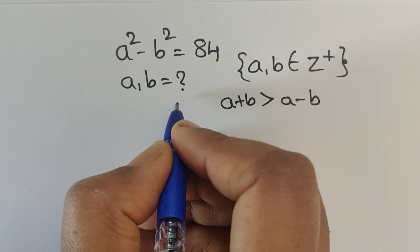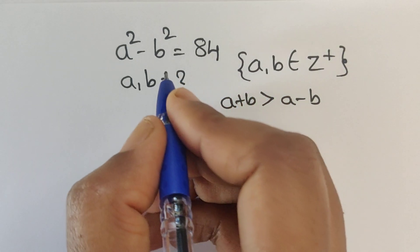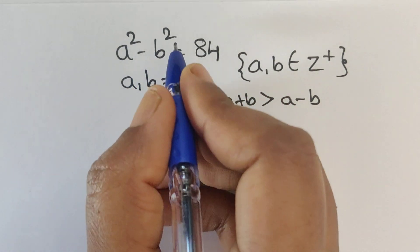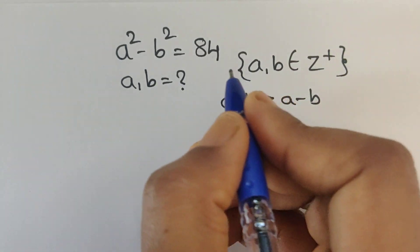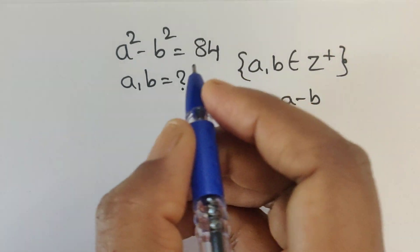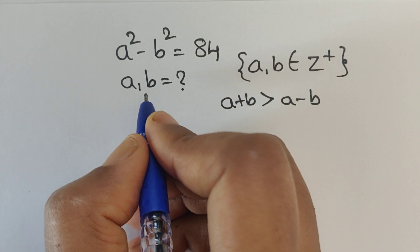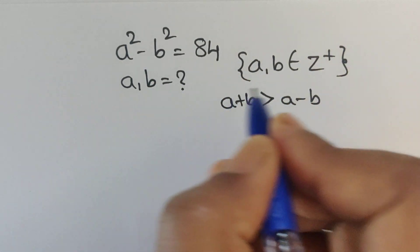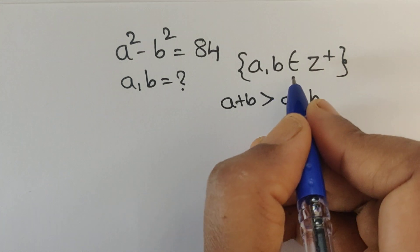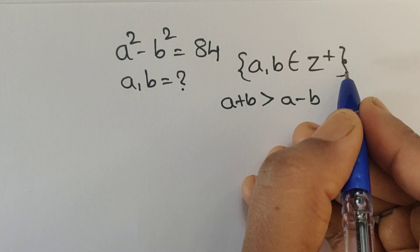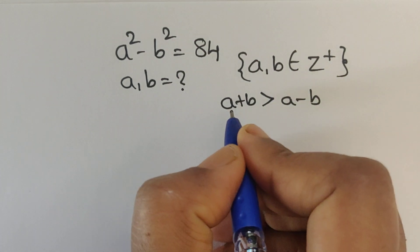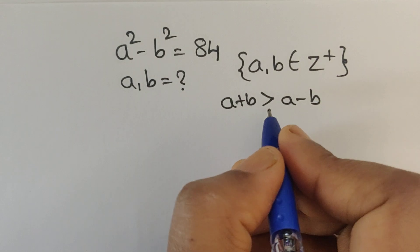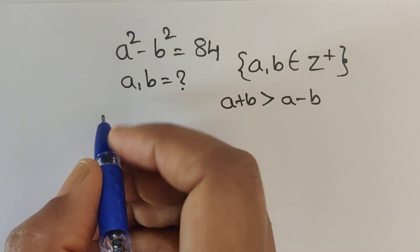Hello everyone, welcome back to our channel. Here we have one problem: a squared minus b squared equals 84. In this problem we have to find the values of a and b, where a and b are both positive integers. So a plus b is greater than a minus b — this is the condition.